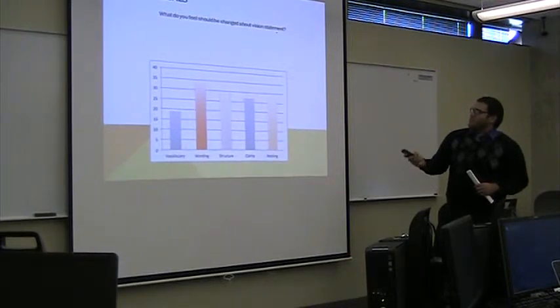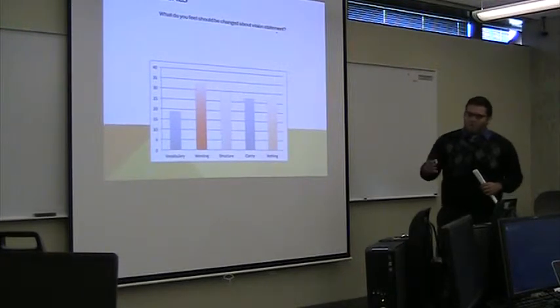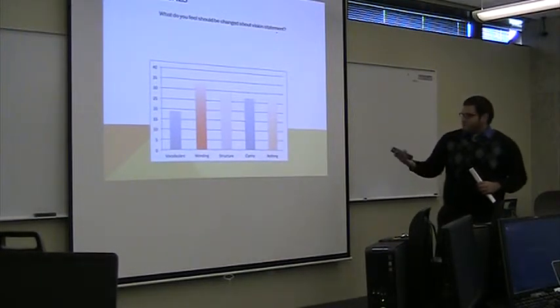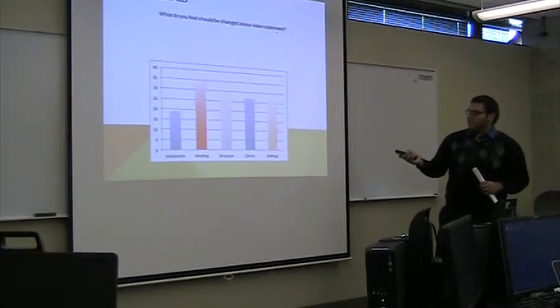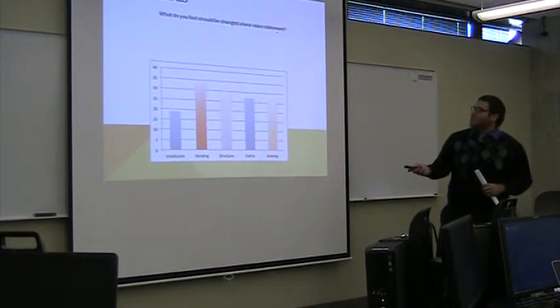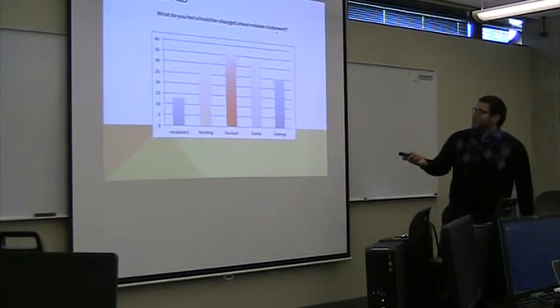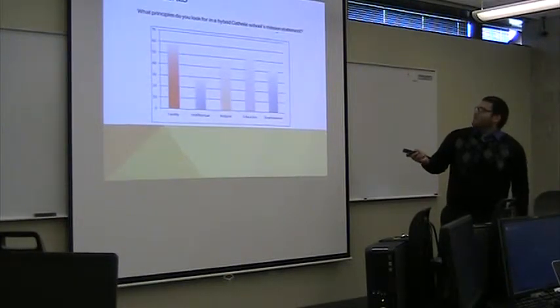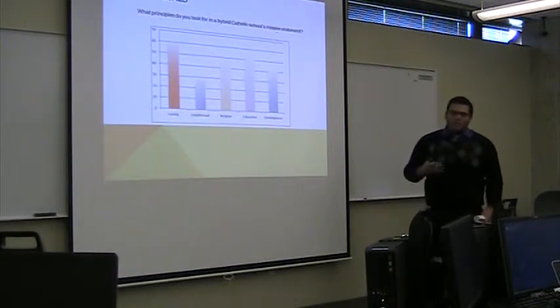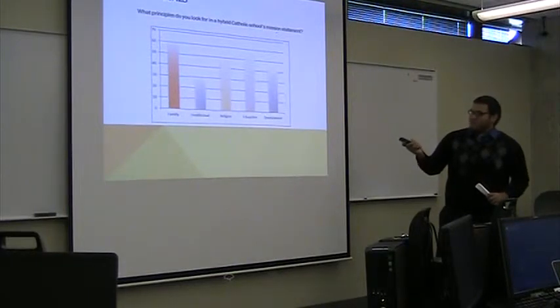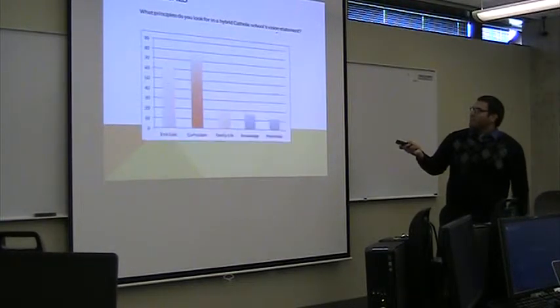And then we just asked questions like, do you feel like the mission statement represents these values? And red represents the highest, purple, second, orange, as I've said before. And then we asked the same question, then we asked them if they could change anything about the vision statement, what would it be? And same colors mean same meanings, and you can see, Ian will explain in a minute what we found about these. And then we asked the same question about the mission statement.